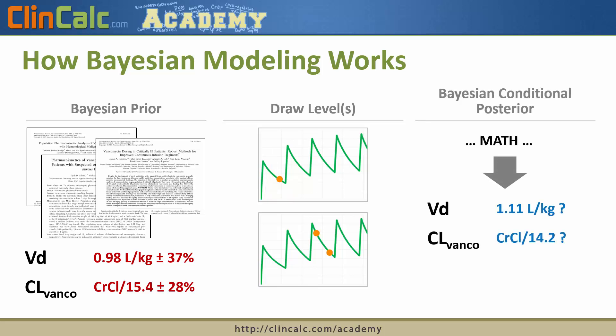From there, a bunch of math is involved. Essentially, the end result of Bayesian modeling is that it gives you a more accurate estimate of the pharmacokinetic parameters you're interested in. Initially we thought our volume of distribution was 0.98 liters per kilogram, but based on the levels obtained, it appears that estimate should be a little bit higher.